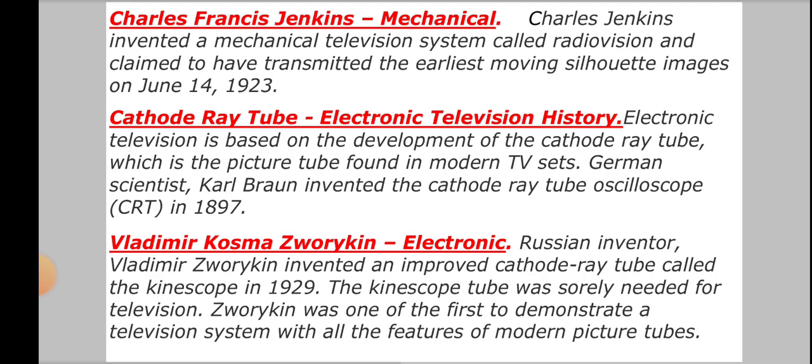Electronic television history started with cathode ray tubes, which are the picture tubes found in modern TV sets. German scientist Karl Braun invented the cathode ray tube oscilloscope in 1897. Then Vladimir Kosma Zworkin, a Russian inventor, invented an improved cathode ray tube called the kinescope in 1929.